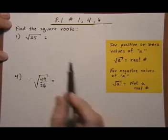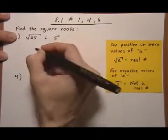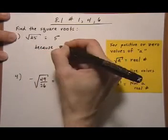So let's take a look. Root 25, well, that equals 5 because 5 times 5 equals 25.